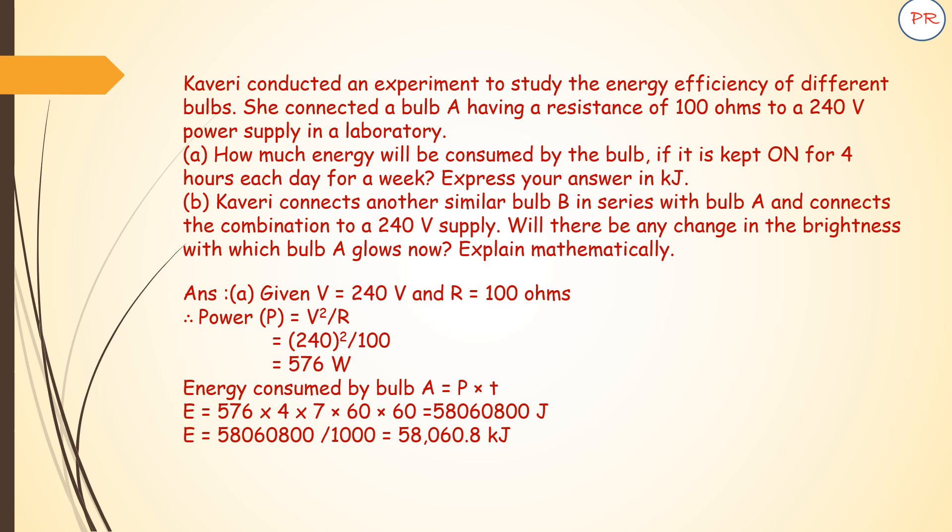Now let us go for part B of the question. What are they saying? Another bulb is connected in series. So when bulbs A and B are connected in series, then total resistance will get added up. So R_net will become R_A plus R_B, which is 100 plus 100, so it comes out to be 200 ohms.